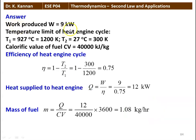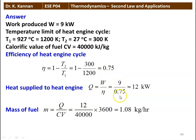Work produced W = 9 kilowatt. Temperature limits: T1 = 927°C = 1200 Kelvin, T2 = 27°C = 300 Kelvin. Calorific value = 40,000 kJ/kg. Efficiency: η = 1 − T2/T1 = 1 − 300/1200 = 0.75. Heat supplied to the engine: Q = W / η = 9 / 0.75 = 12 kilowatt. Mass of fuel: M = heat supplied / calorific value = 12 / 40,000 × 3600 = 1.08 kilograms per hour. That is the answer.